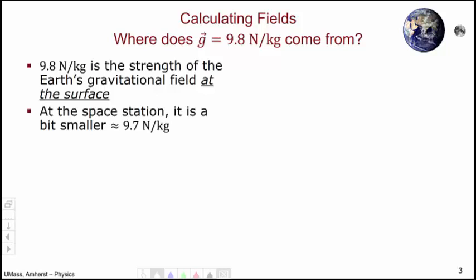At the space station, which is just outside of the atmosphere, the value of g is a little bit smaller, about 9.7. From this, we can conclude that the strength of the gravitational field depends upon distance. The further you are from the planet, the weaker the gravitational field.